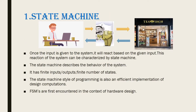First, let us see what is a State Machine — that is, a Finite State Machine. Consider a system: if we give an input to the system, depending upon the input, the system will react, process it, and give an output. This behaviour can be characterized by a State Machine.